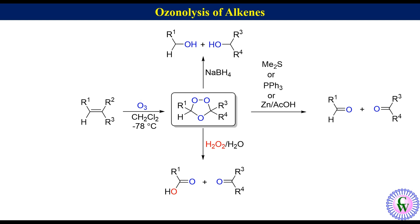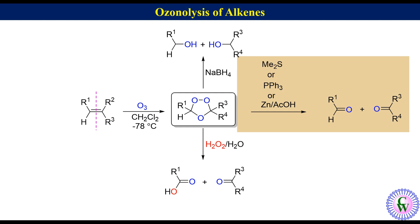To draw the product formed by the reaction of ozonide with dimethyl sulfide, triphenyl phosphine, or zinc acetic acid: break the molecule into two parts from the middle of the C-C double bond and connect the double bond of each fragment with oxygen.